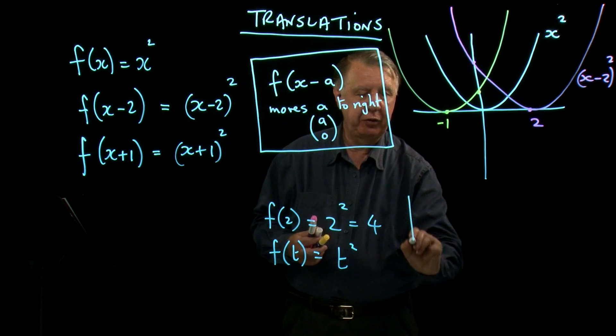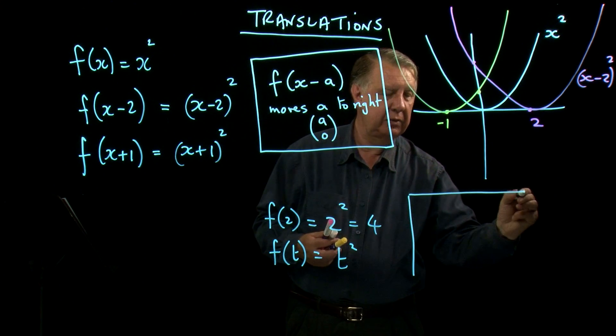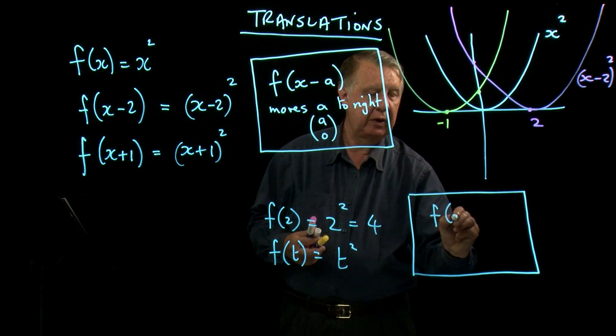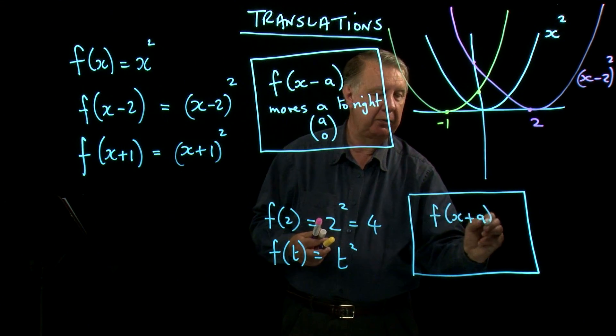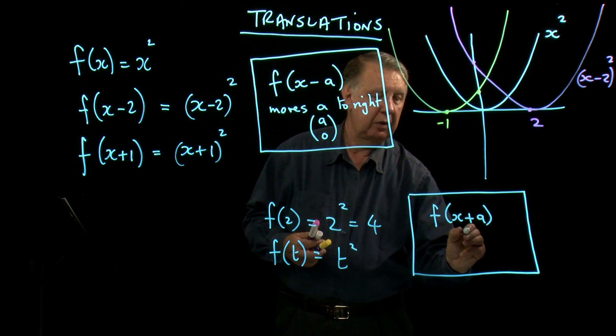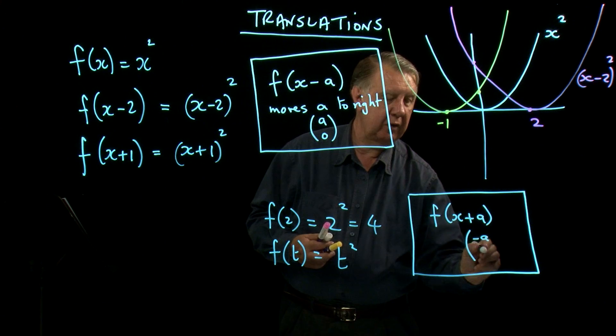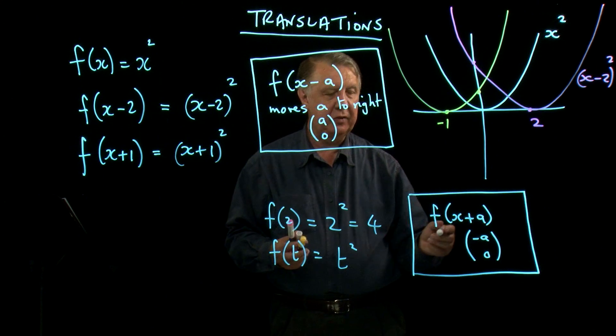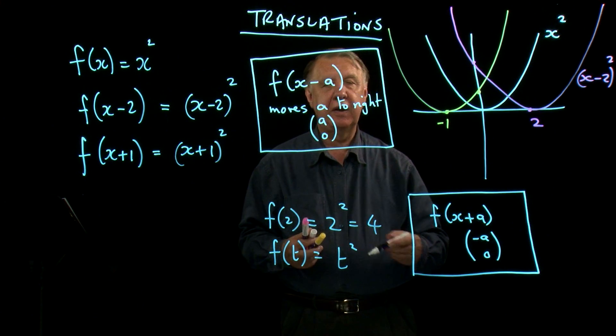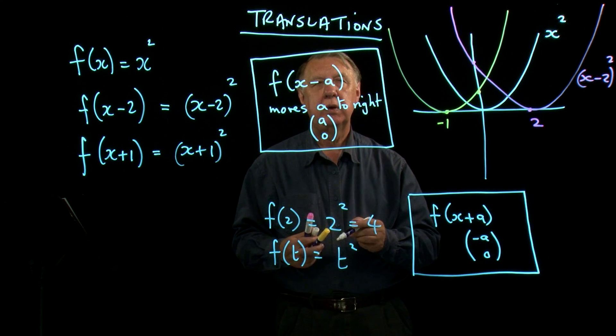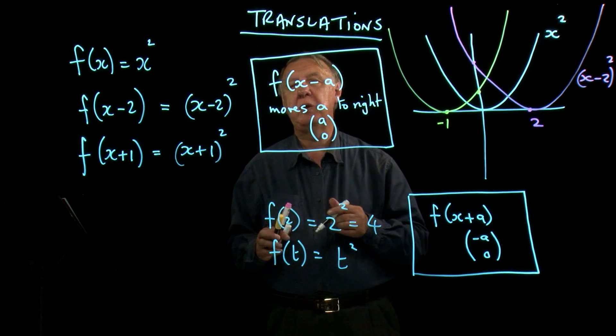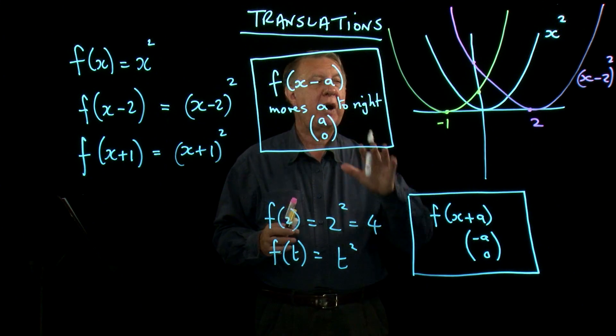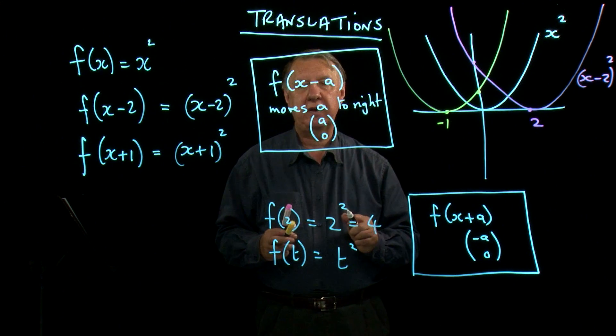And if you want to state the other one as well, then function x plus a is going to move a to the left. In other words, it's going to be the vector negative a 0. So that's how we cope with looking at translations parallel to the x axis.